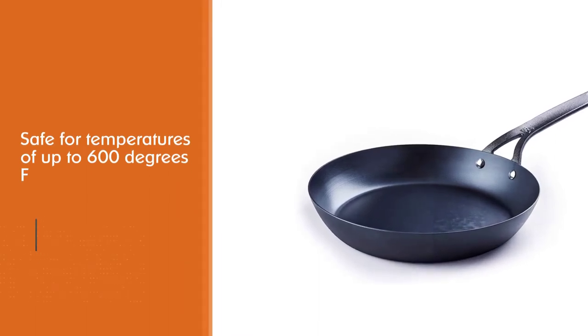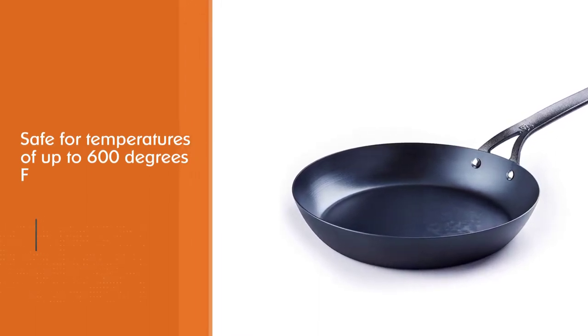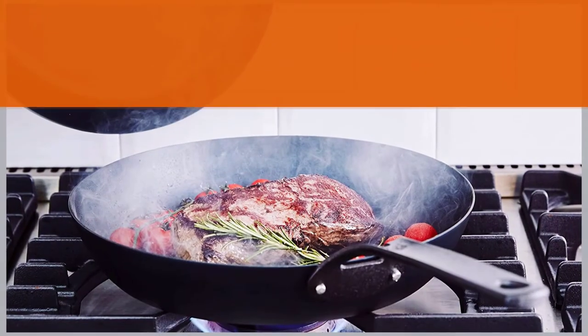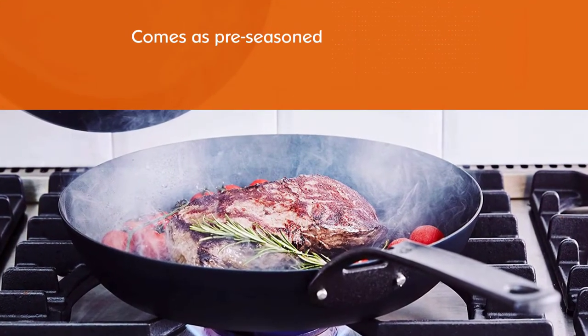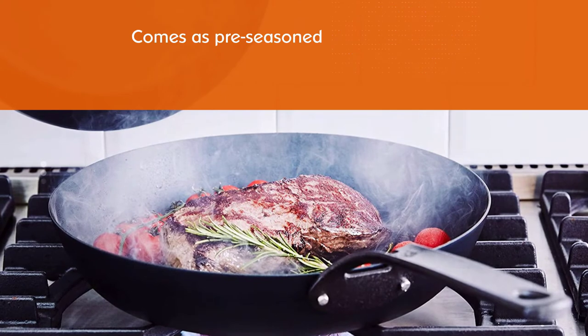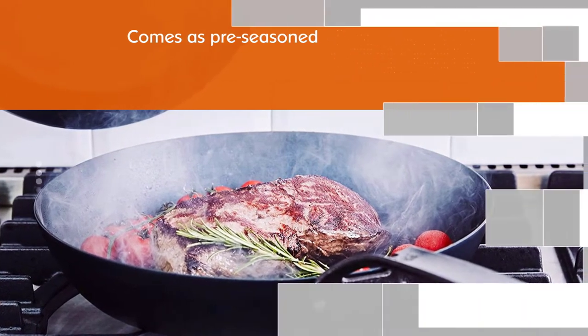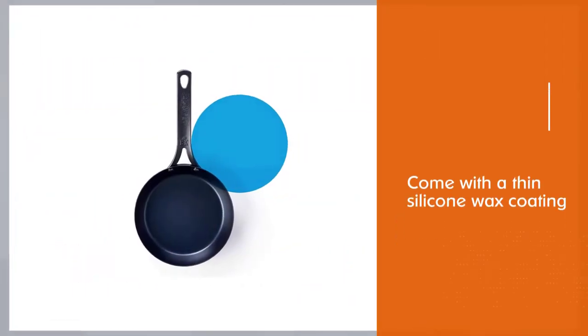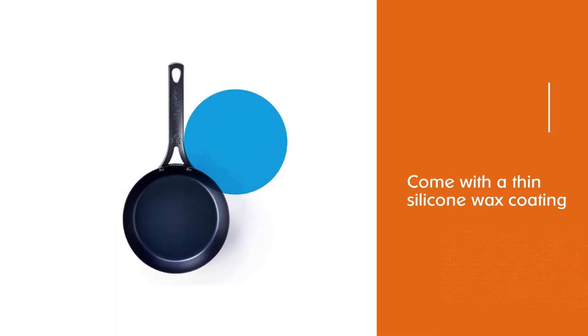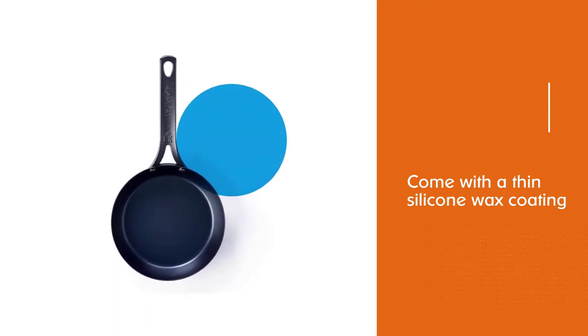The cast iron handle is immensely strong. The pan can go from cooktop to oven, grill, or open flame cooking and is safe for temperatures of up to 600 degrees Fahrenheit. The BK skillet is pre-seasoned but does come with a thin silicone wax coating that needs to be washed off by hand before use.